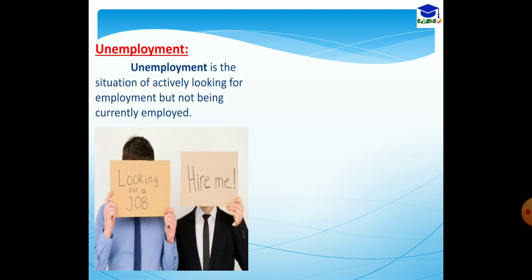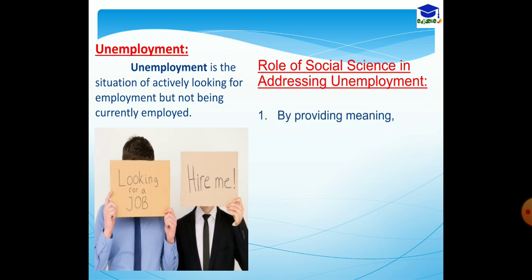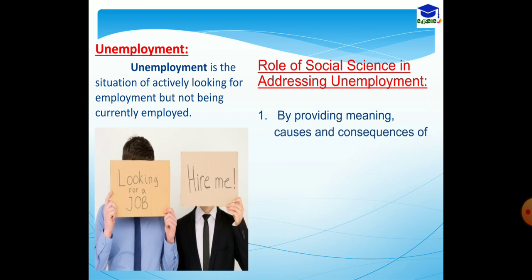The next issue is unemployment. Unemployment is also a burning issue of every country, not only India. Unemployment is the situation of actively looking for employment but not being currently employed. Now, the role of social science in addressing unemployment. Number one, by providing meaning, causes, and consequences — similar to poverty — when the subject provides the meaning, causes, and consequences of unemployment, the people of the society become aware, and this leads to doing better for themselves as well as for their community.